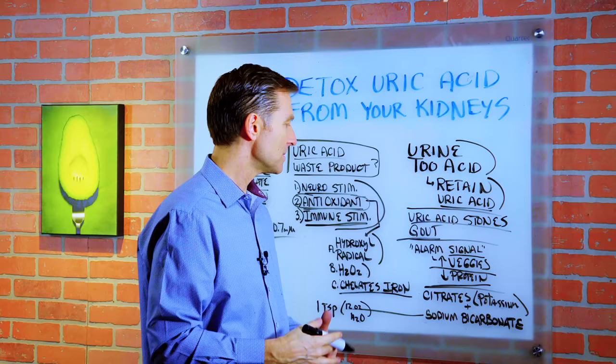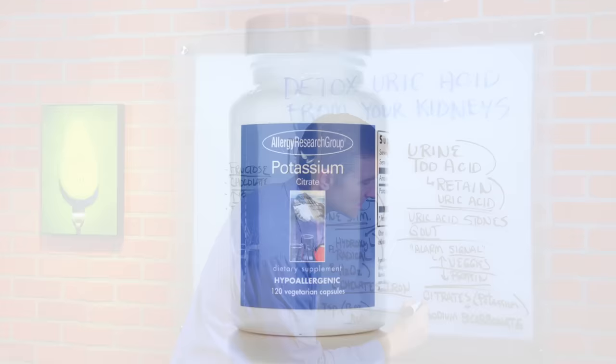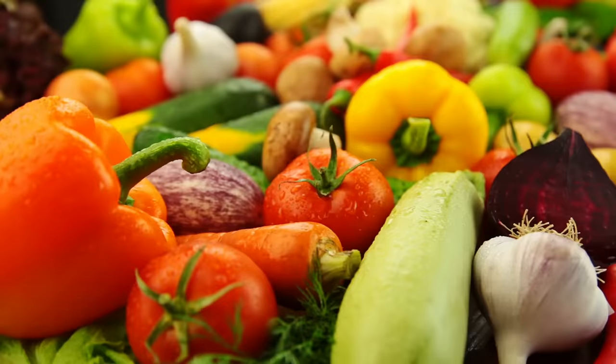You can actually take potassium citrate, which is alkaline. You can consume more vegetables, which I think you should do. You can cut down your proteins. You can also take something called sodium bicarbonate, which is baking soda. A real simple solution.